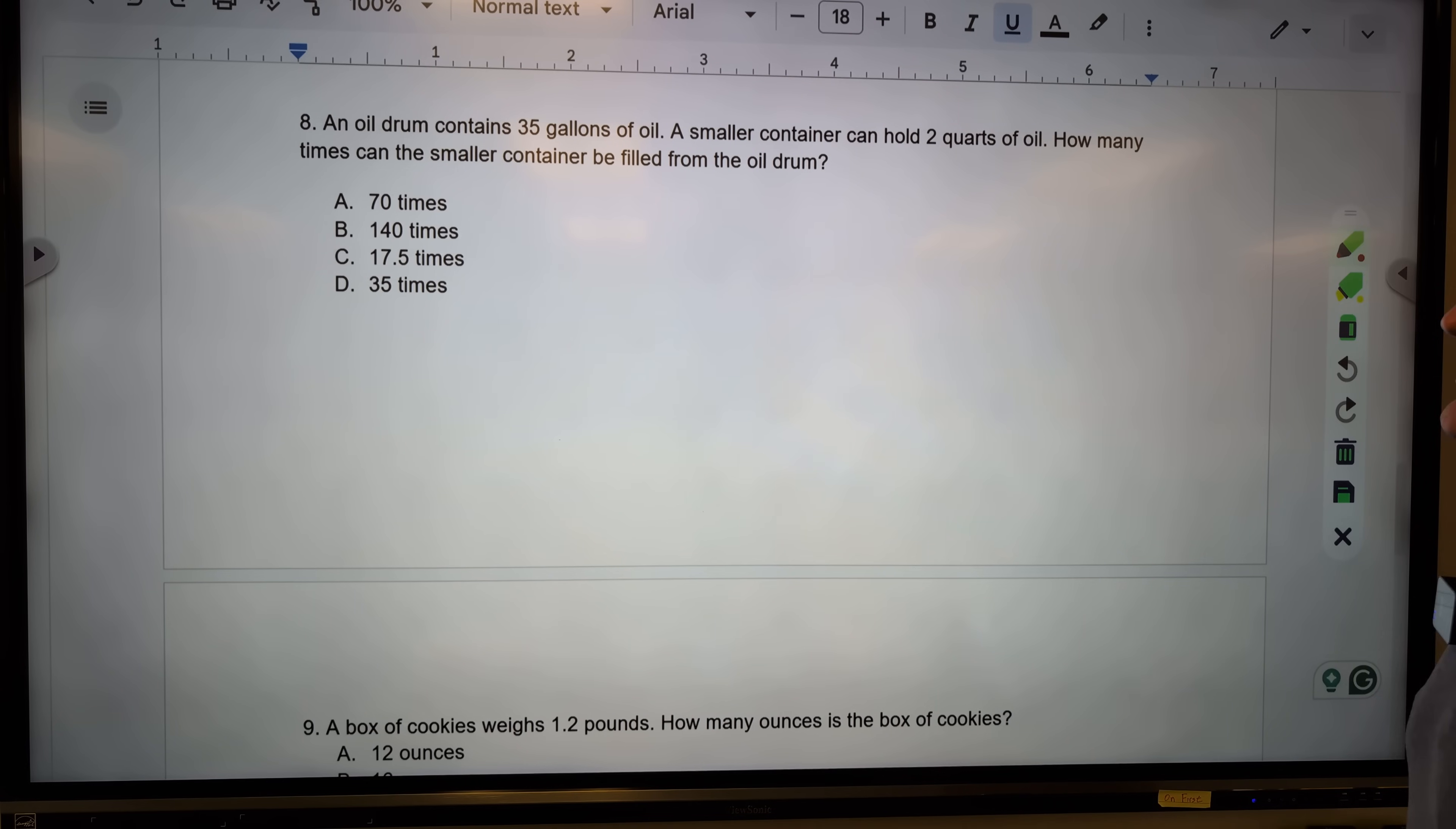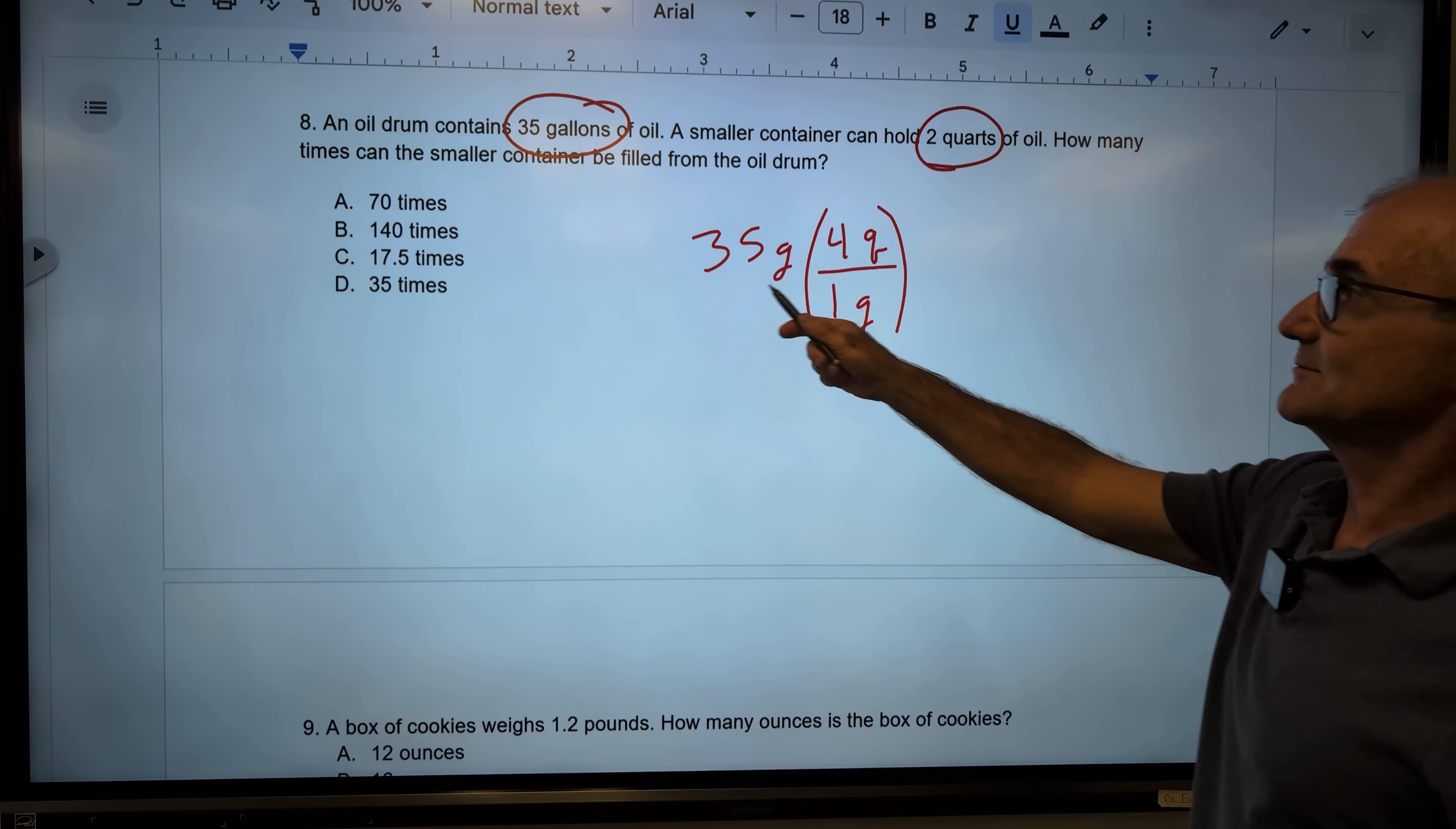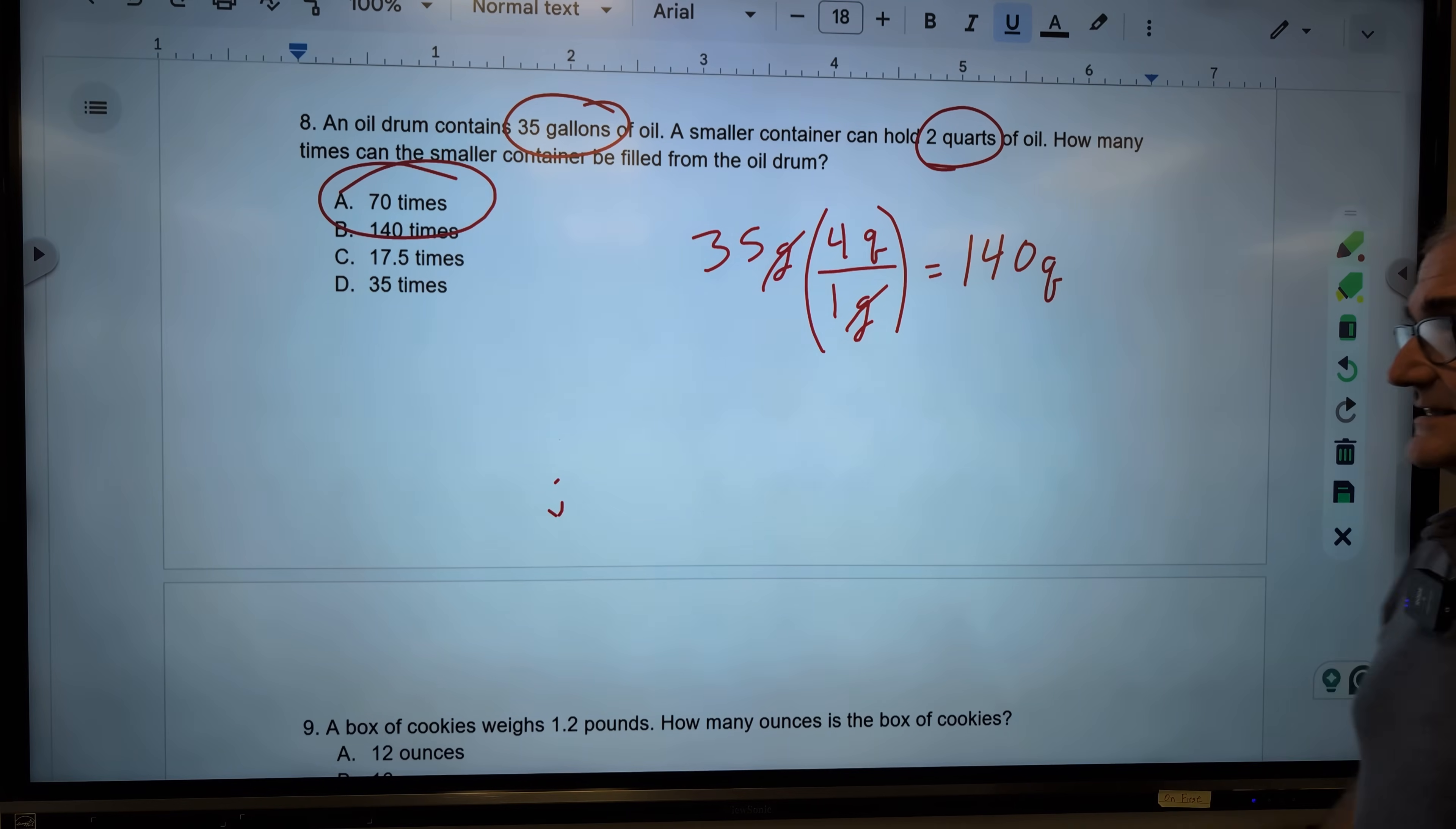Okay, problem number eight. Oil drum contains 35 gallons of oil. A container could hold two quarts. So I have to go gallons to quarts. 35 gallons. I'm going to multiply it by this factor of one again. I know that one gallon is four quarts. That's not going to give me my answer. That's just going to give me how many quarts. I'm going to double that. 35 doubled, doubled, 7140. So again, gallons cancels. And this gives me 140 quarts. Natural distractor would be B. But it says that container holds two quarts. So how many containers can I get? So I have to divide this 140 by that too to get a correct answer. Answer A, 70 right there.